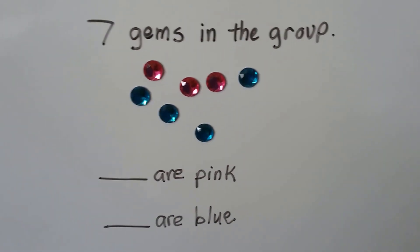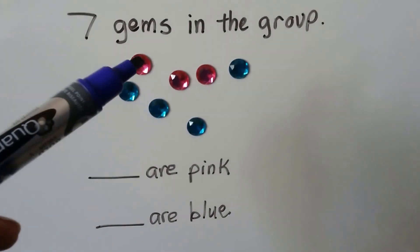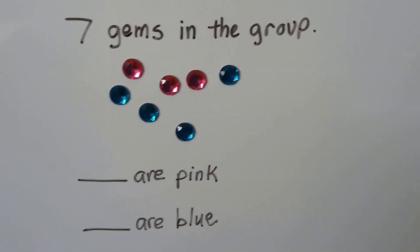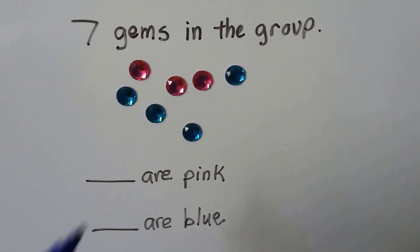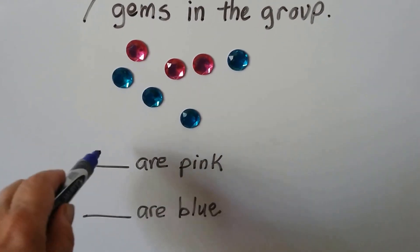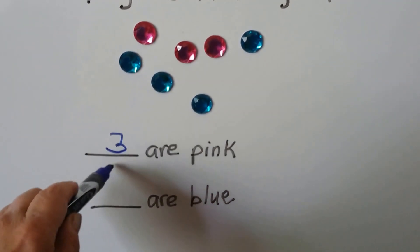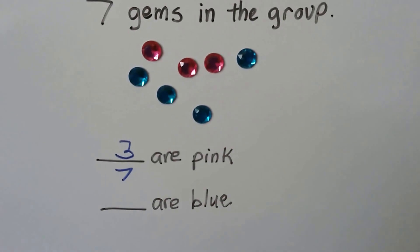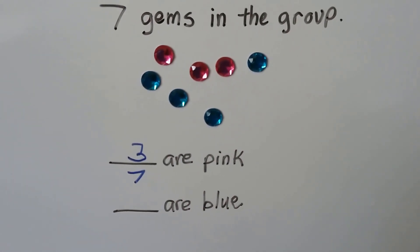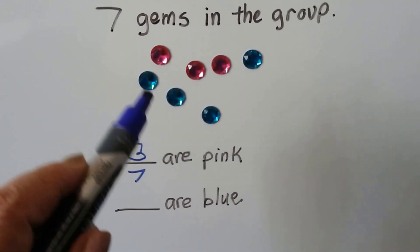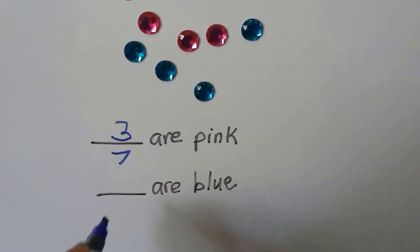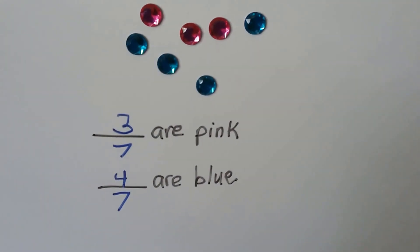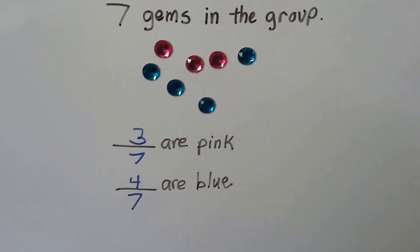We have seven gems in this group — one, two, three, four, five, six, seven. How many are pink? I see one, two, three are pink. We know there's seven in the group, so three-sevenths are pink. How many are blue? There's one, two, three, four blue ones. There's seven in the group, so four-sevenths are blue.